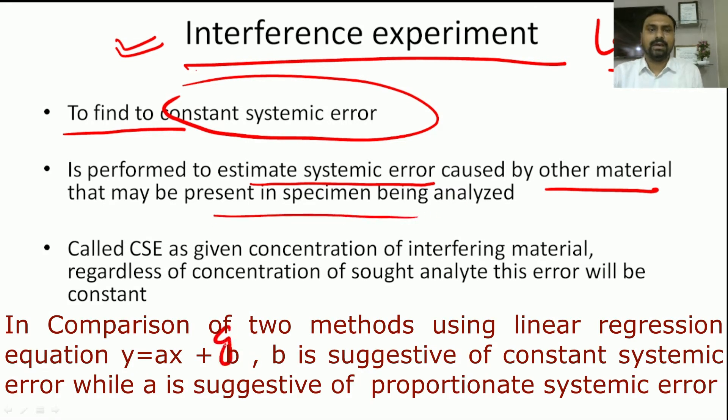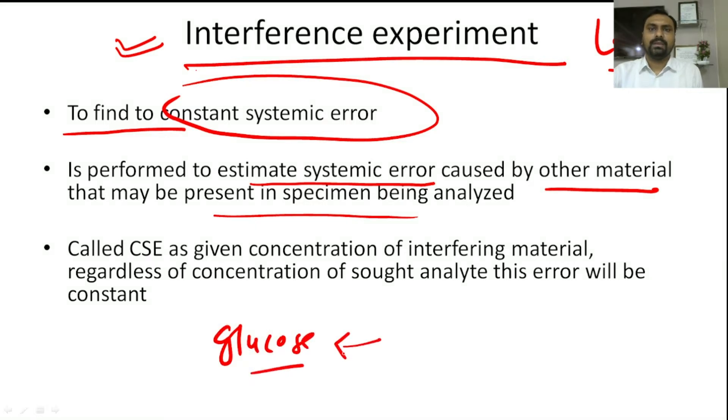Suppose we are estimating glucose, and due to other material like vitamin C, ascorbic acid, this other material is causing systemic error. So we want to find out that constant systemic error. For that, we will perform the interference experiment.